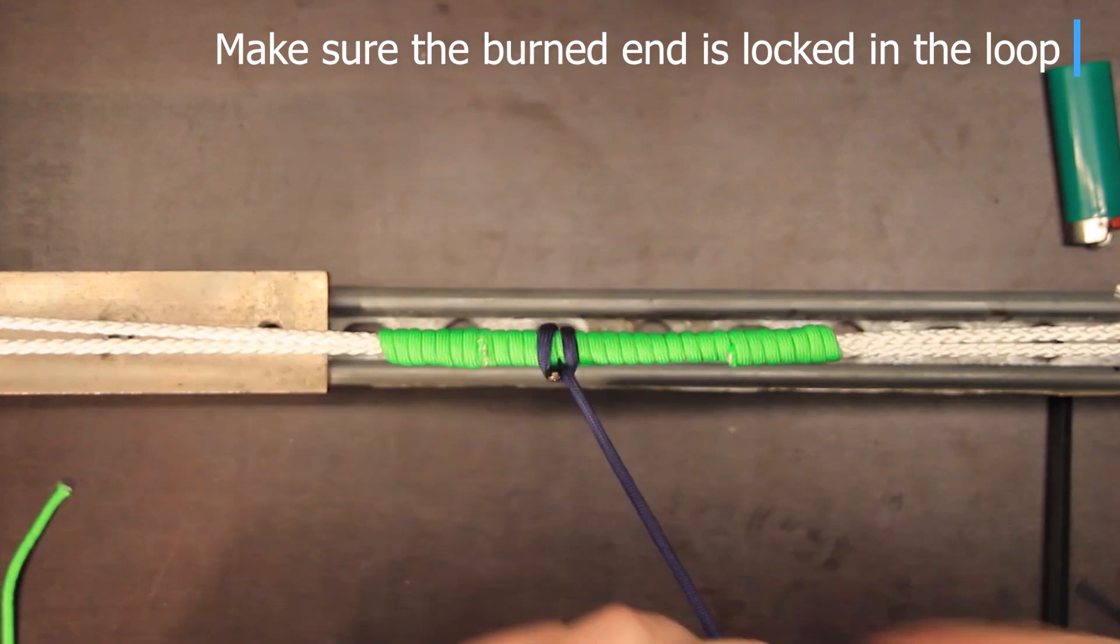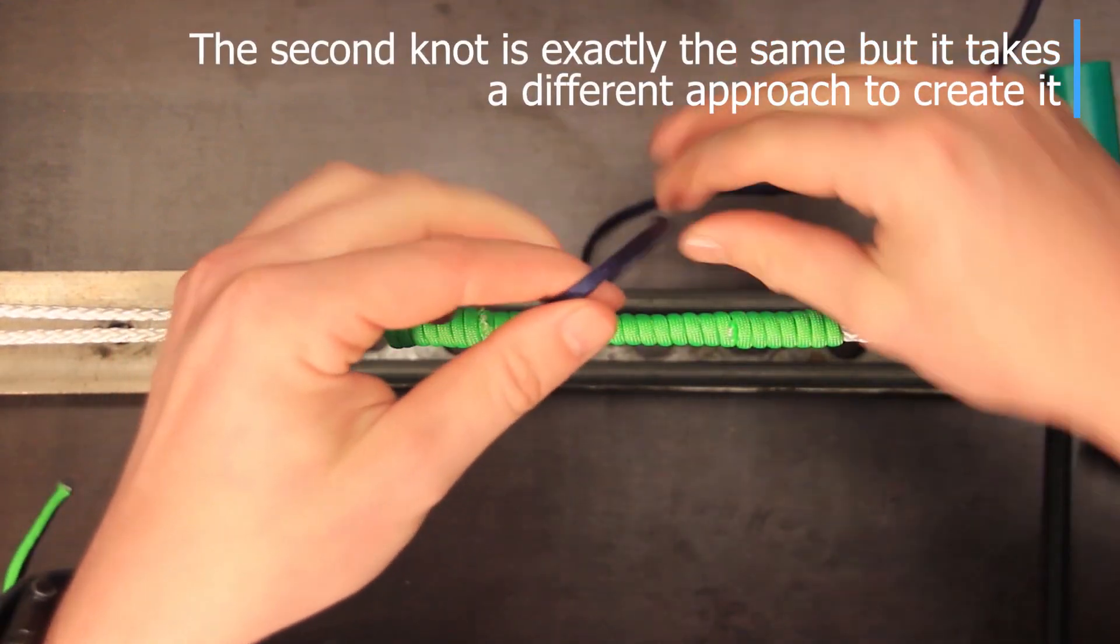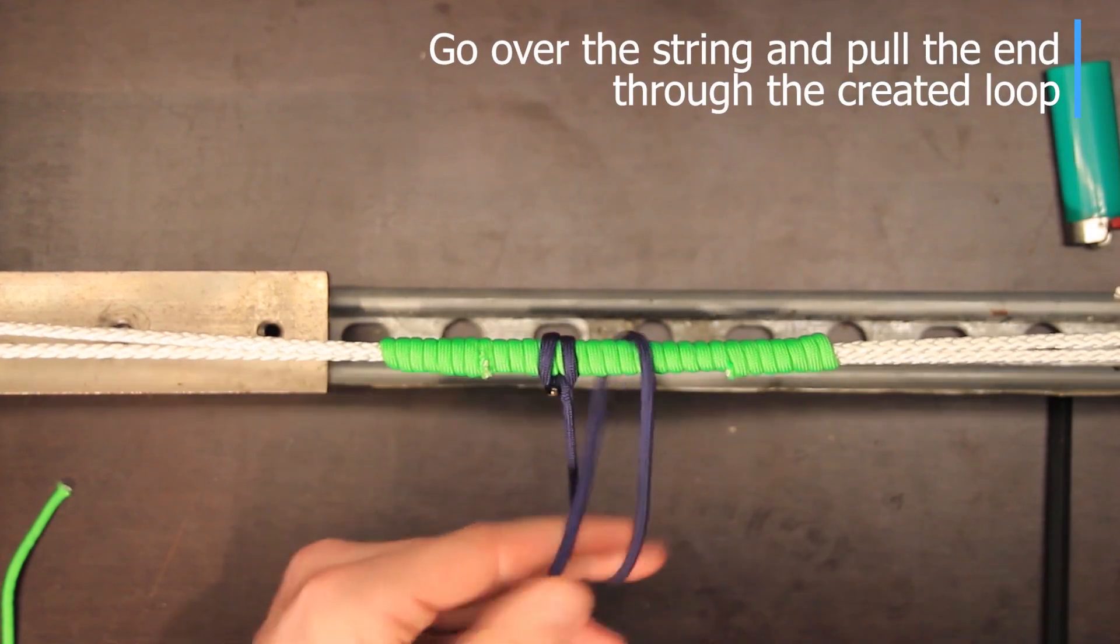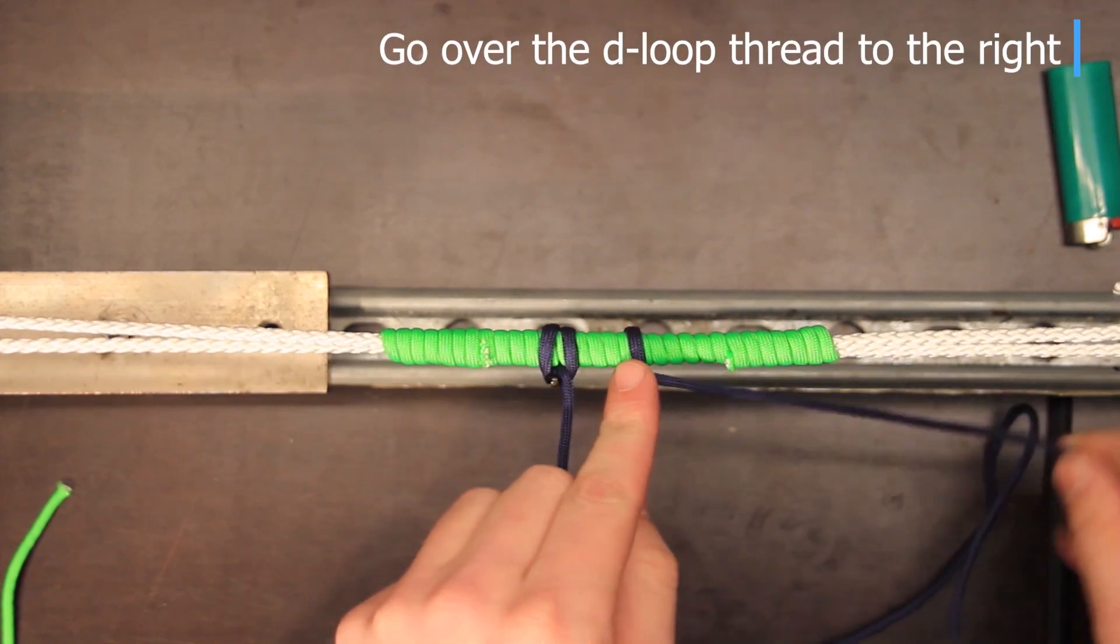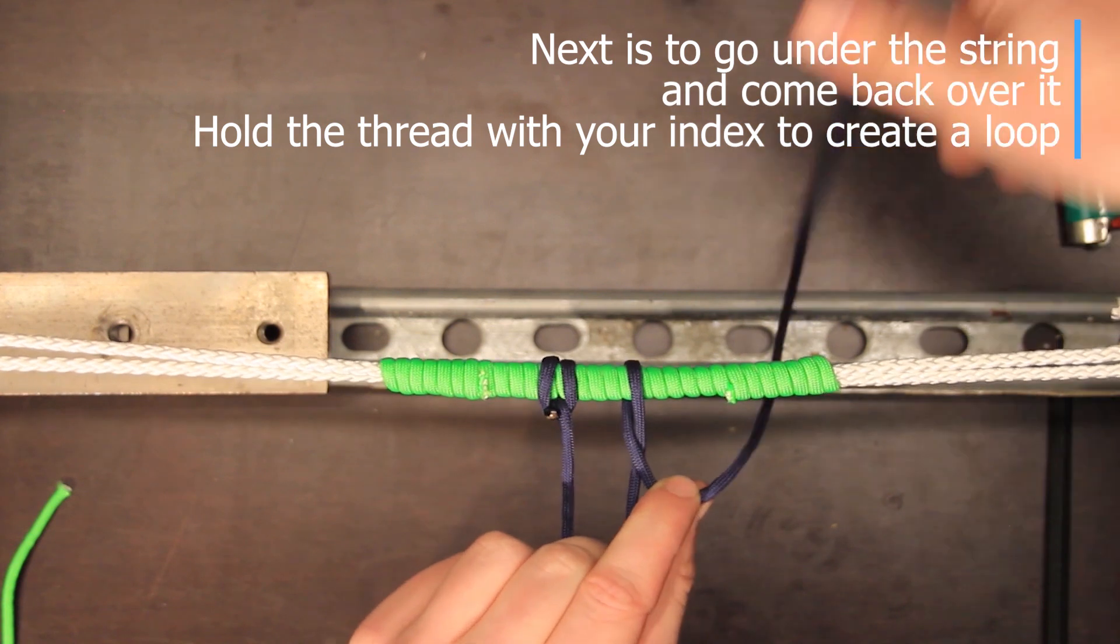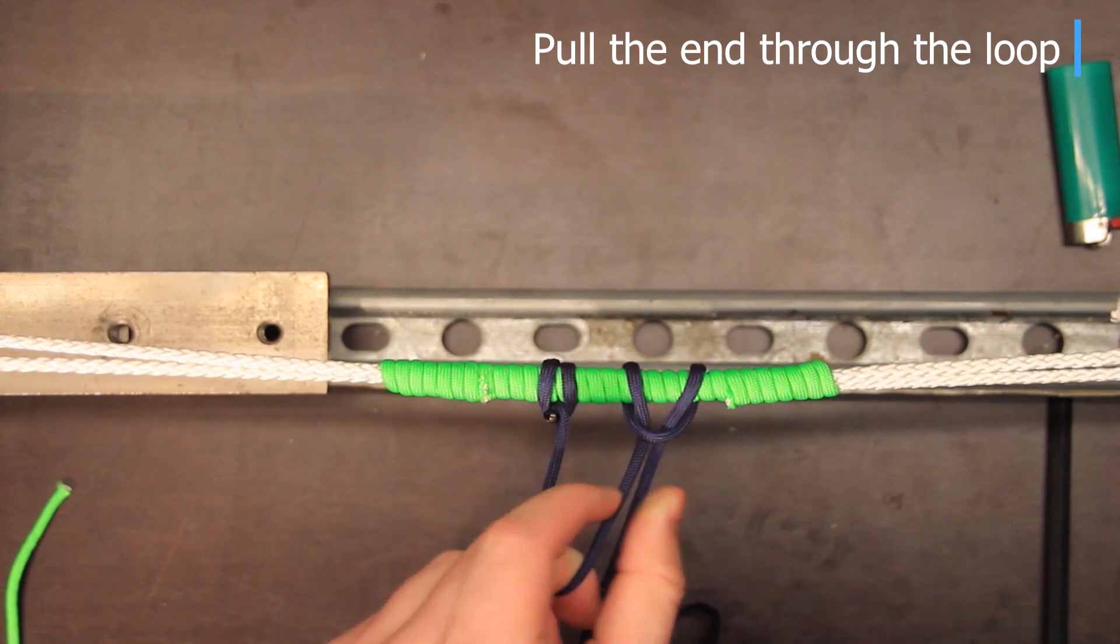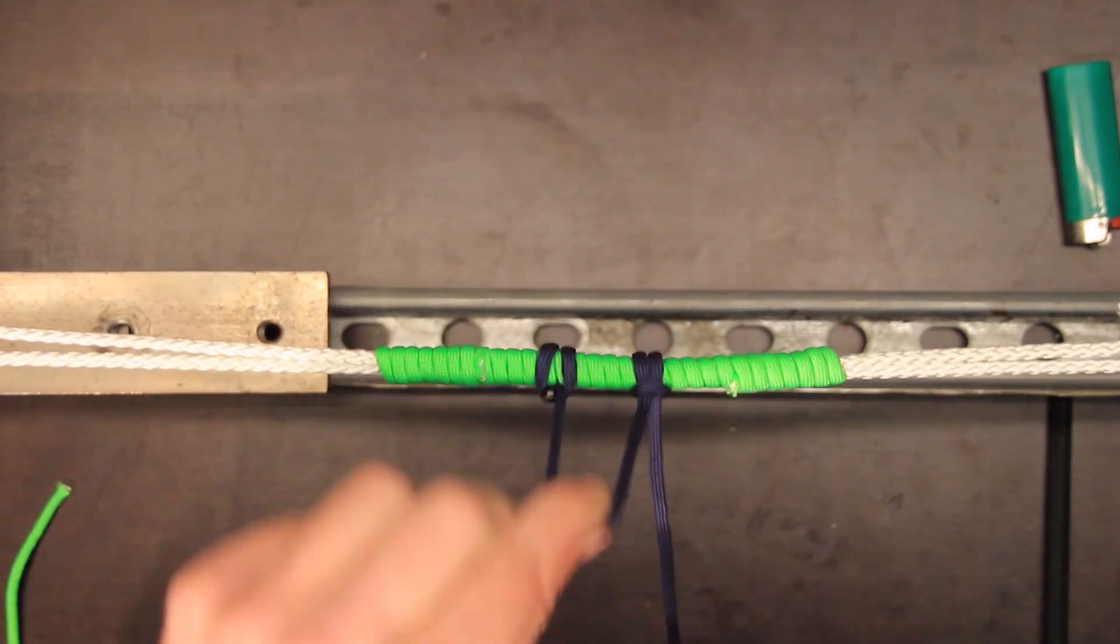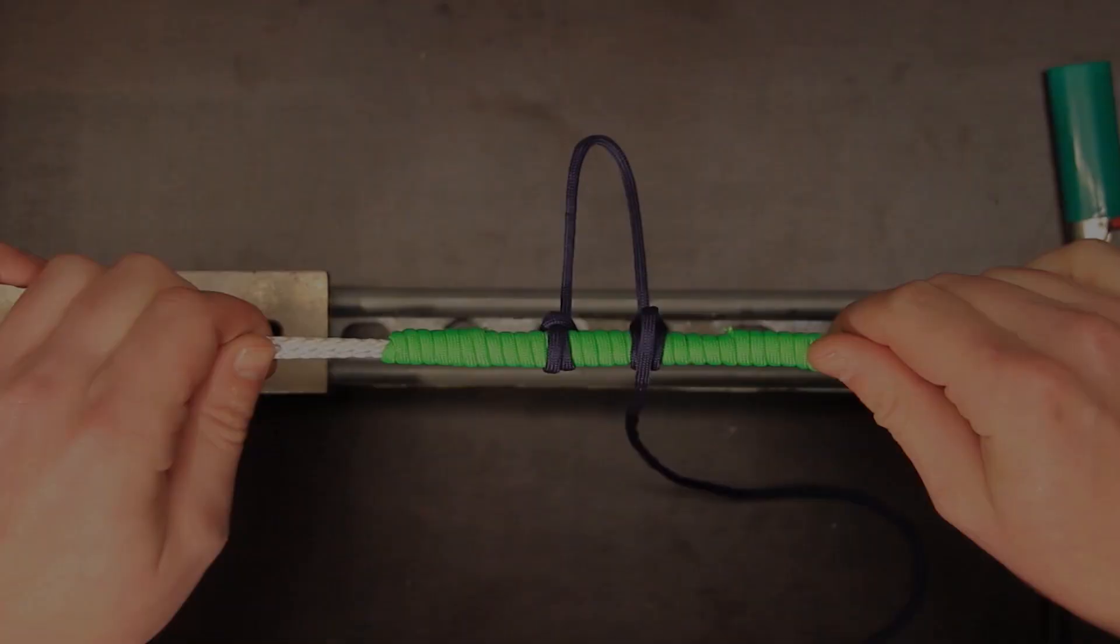It should be locked in now the second knot we're gonna make is exactly the same and only then on the opposite side of the string we're gonna pull the tag over the string and under it back through the loop we made then we go over the thread again pull a little loop there and put the d-loop thread back through that loop over the center serving and put it into place now you can make it to length cut it make a good burn at the end and secure it in tight.